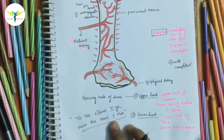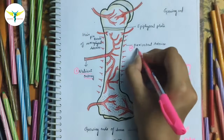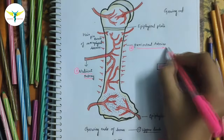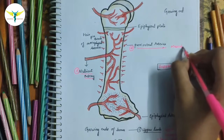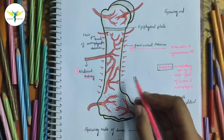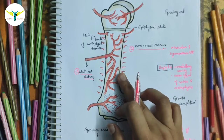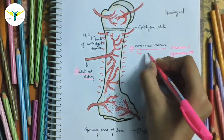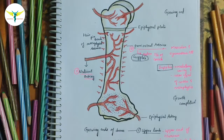Coming to the periosteal arteries — these are especially numerous underneath muscular and ligamentous attachments. They ramify beneath the periosteum and enter the Volkmann's canals to supply the outer one-third of the cortex. They also supply the epiphyseal plates at the growing ends.